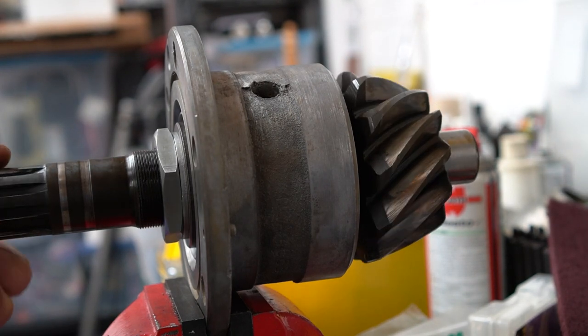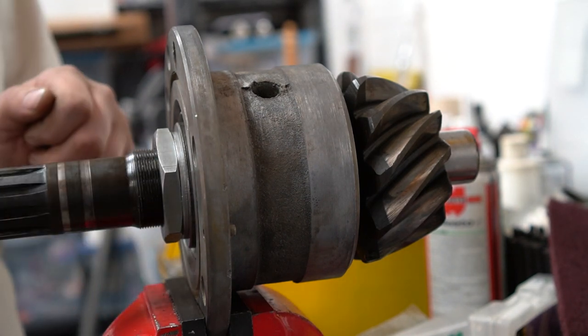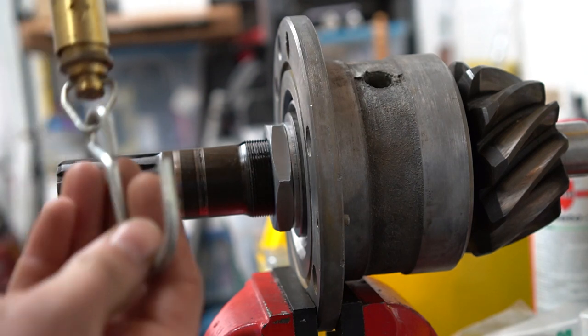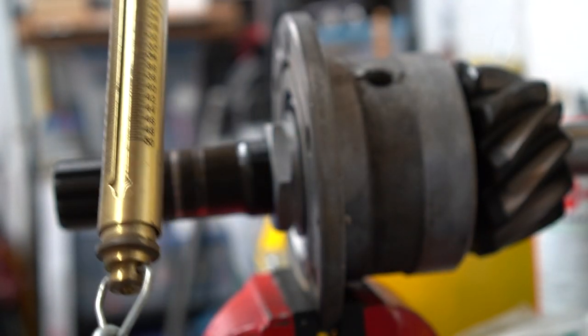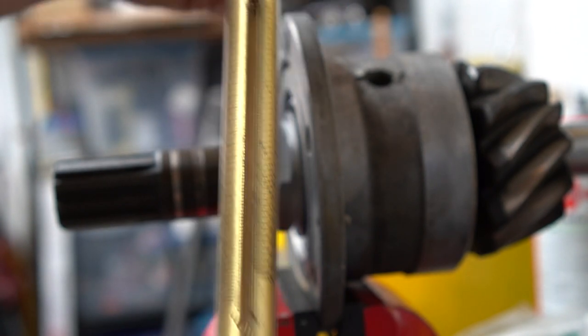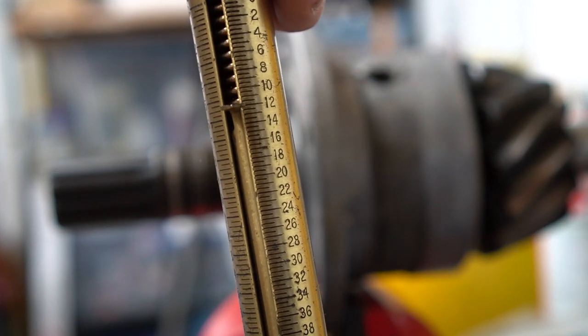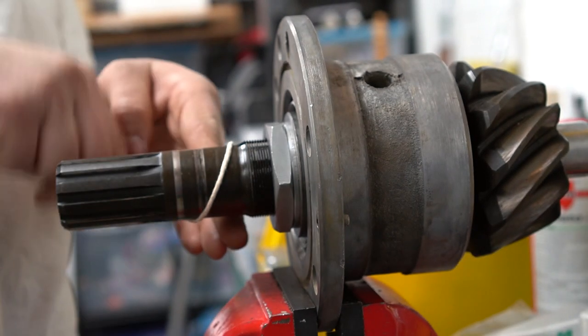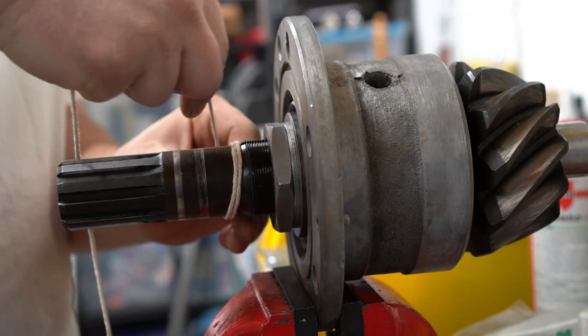To set our bearing preload, the manual wants you to wrap a string around this portion, right in through here, and use a spring scale and pull it. And it says 16 to 21 pounds. So, this is a spring scale. If you've never seen one, basically, you see these a lot on people who fish. They'll hook their fish down here and lift it up. And, you know, however heavy the fish is, pulls on the scale. Now, the manual doesn't really specify which direction to pull. I'm going to pull it in the direction it would spin on a tractor, which is clockwise.